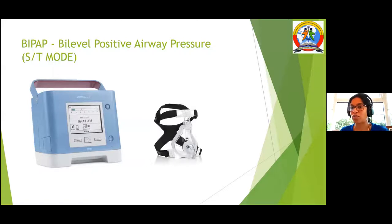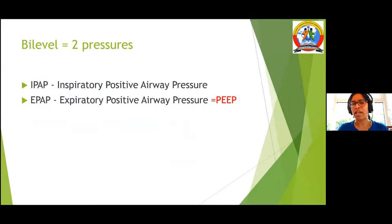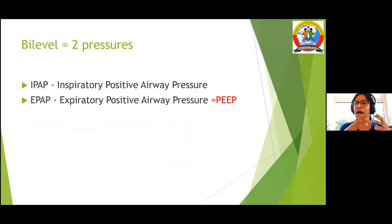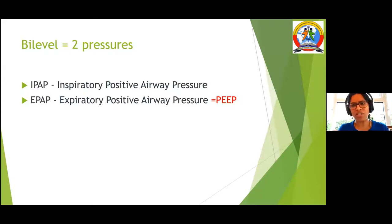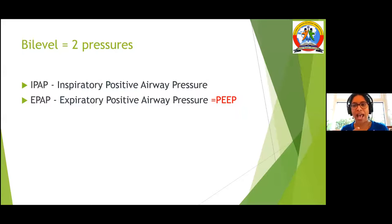BiPAP is bi-level positive airway pressure — you have two pressures: IPAP (inspiratory positive airway pressure) and EPAP (expiratory positive airway pressure). EPAP is essentially your PEEP. If the patient is moving from CPAP to BiPAP — because they are going into hypercapnia — your EPAP is set at the same value as your previous CPAP. As senior nurses we would change these settings without waiting for the doctor, but please follow your local guidelines.